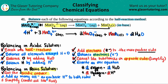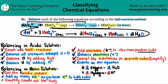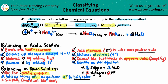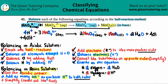We completed the first part — balancing in acidic solution. Now just a couple more steps to convert to basic. For this part, we add as many OH⁻ as we have H⁺, and we have to be fair — add them to both sides. I can see I have four H⁺, so I need to add four OH⁻ to each side. Add four OH⁻ to the left and four OH⁻ to the right. That part is done.